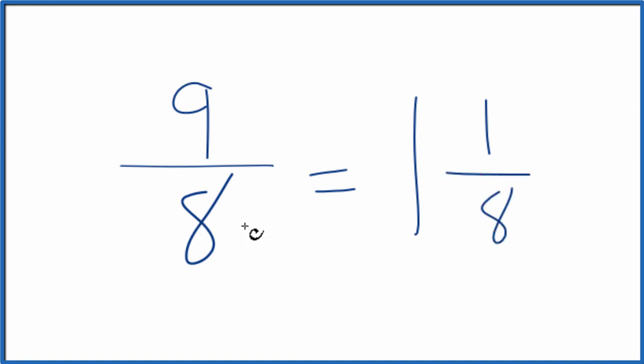So 9 eighths, the improper fraction, that equals the mixed number, or mixed fraction, 1 and 1 eighth. But back to our original question, the fraction 9 eighths, we really can't reduce this any further. It's already simplified.